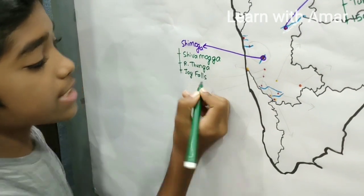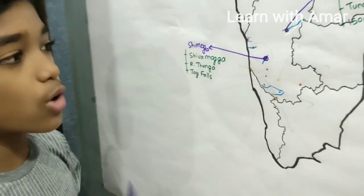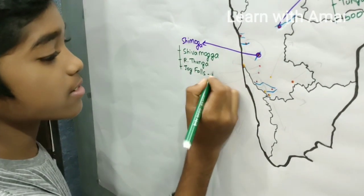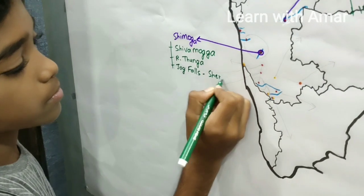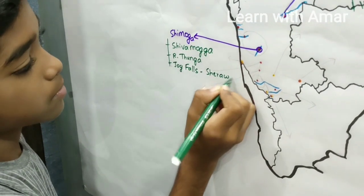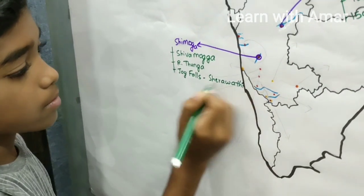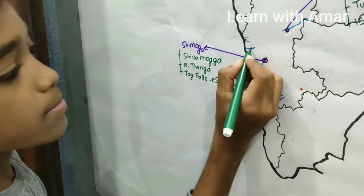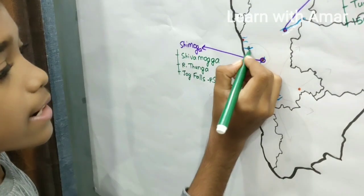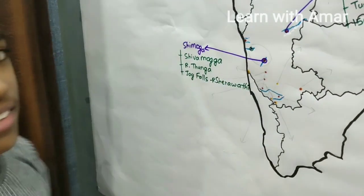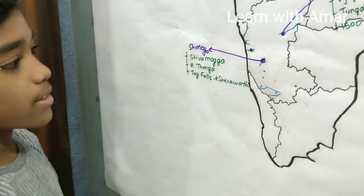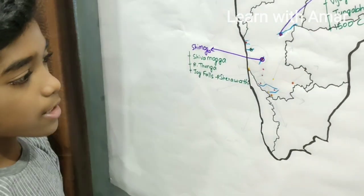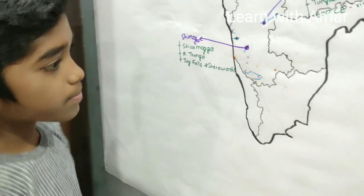Jog Falls. These Jog Waterfalls are situated on the Sharawathi river. This is Jog Falls, right here, and this is the Sharawathi river. This is Shimoga and this is the Tungabhadra river.